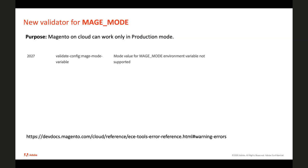We also added a new validator for Magento mode. As you know, Magento on cloud can work only in production mode, but previously we didn't have any validation for this. As a result, deployment happened successfully and everything looked fine, but it caused issues and it wasn't clear that something was wrong or what was wrong. Right now we can see a warning in the log about incorrect mode for Magento, and this error has a code and more detail.